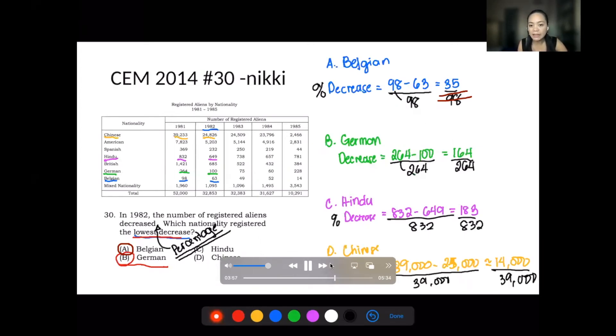And for the Hindu, we have 183 divided by 832, and 39,000 for Chinese. And then let's get the percentage.